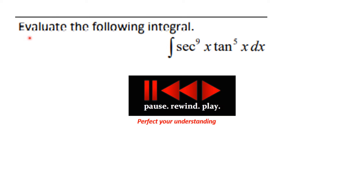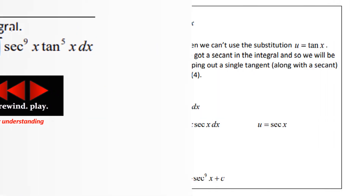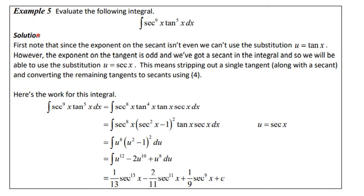Let's evaluate the indefinite integral of secant to the ninth x times tangent to the fifth x dx. Since both exponents are odd, we strip out a tangent x and a secant x, leaving secant to the eighth x times tangent to the fourth x as part of the du. This commits us to the substitution u equals secant of x. We change tangent to the fourth x into the quantity secant squared x minus one, squared, and apply the substitution where du equals secant x times tangent x dx.